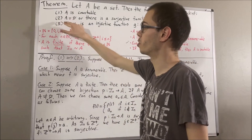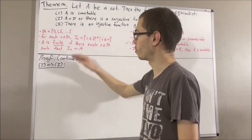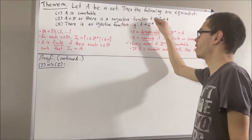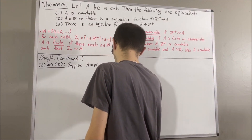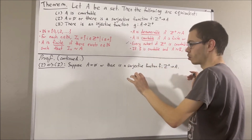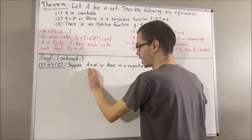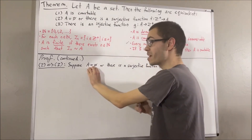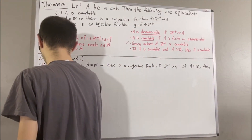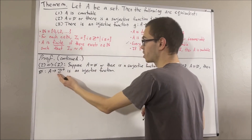Now let's show if 2 is true, then 3 is true. Suppose 2 is true — we're supposing A is equal to the empty set, or there is a surjective function F from the positive integers to A. We have two possibilities and we're going to show in either case that 3 is true. Let's consider the first possibility: A is equal to the empty set. Then the empty set is an injective function from A to the positive integers, so there exists an injective function from A to the positive integers, and therefore 3 is true.